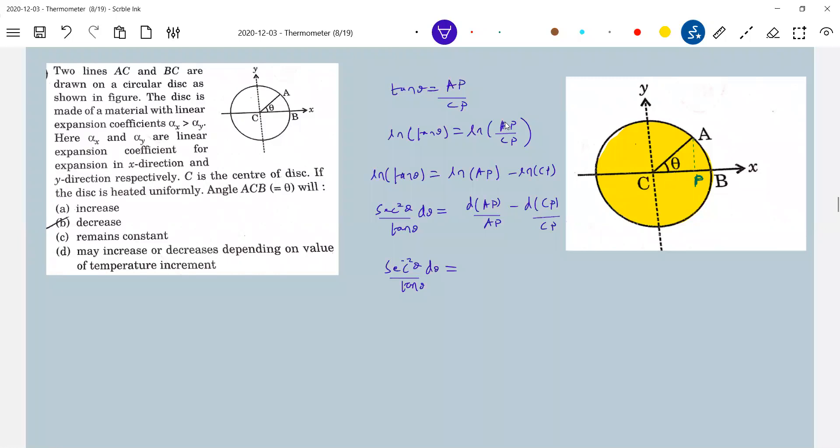dAP, elongation or expansion along y axis, should be equal to alpha y into delta t. This should be alpha x into delta t.